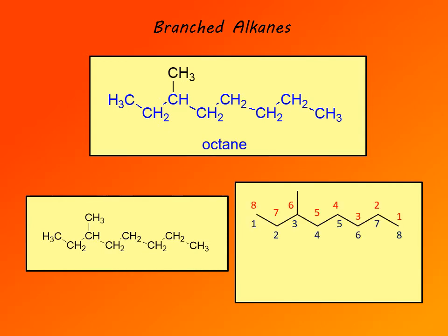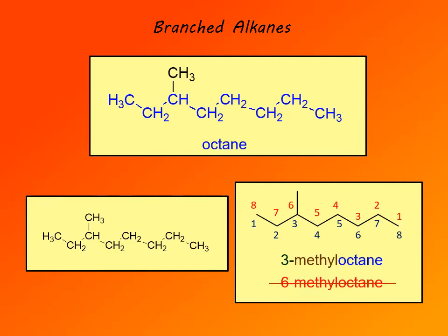It's easier to do the naming if the formula is a line formula. So we have methyl octane, but now we need to indicate on which carbon the methyl group is. We can number this chain two ways: left to right or right to left. Numbering left to right gives number three to the methyl group; numbering right to left gives number six. Naming rules state that the substituent should get the smallest possible number. So this is 3-methyloctane — 6-methyloctane would be wrong.